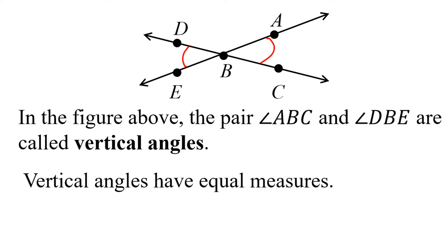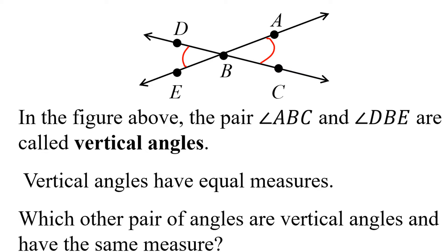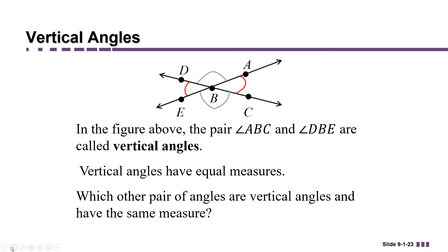Turns out that vertical angles always have equal measures. So even though we don't know exactly the measure of these two angles, we do know that they're the same measure. Can you identify another pair of angles on this diagram that are vertical angles and so have the same measure? That's right. If you said angle DBA and angle EBC, you were correct.